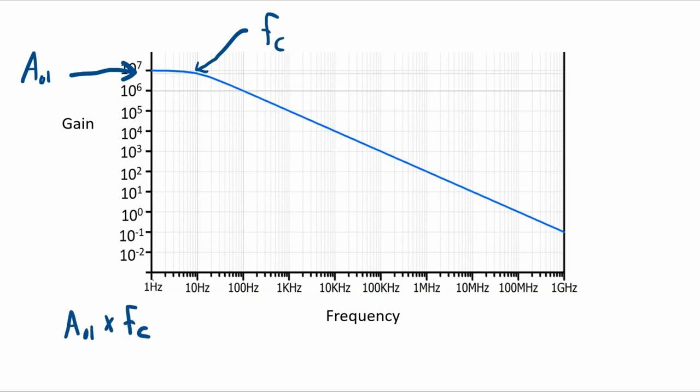And for this particular op amp, this value is 10 to the seventh times 10. It's a hundred million. So I should note that the values that you see here are for a particular op amp and will vary from op amp to op amp, but the principle stays the same. Also note that the gain that I'm using for this product is a unitless gain, the gain as a ratio. It's not in decibels.